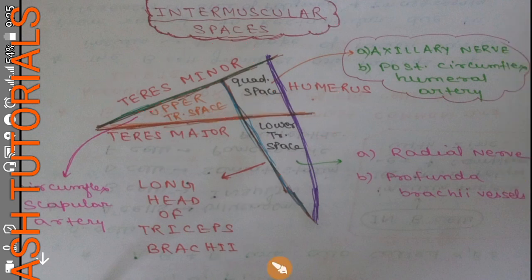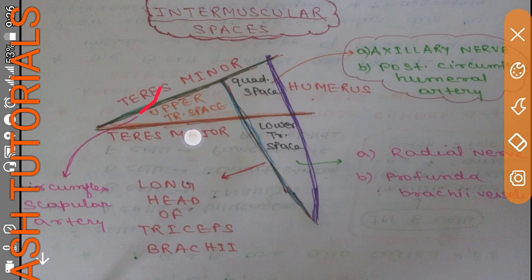Coming to the borders of the upper triangular space: the upper triangular space is superiorly bounded by teres minor, inferiorly bounded by teres major, and laterally bounded by the long head of triceps brachii. The structure passing through the upper triangular space is only one artery — the circumflex scapular artery.